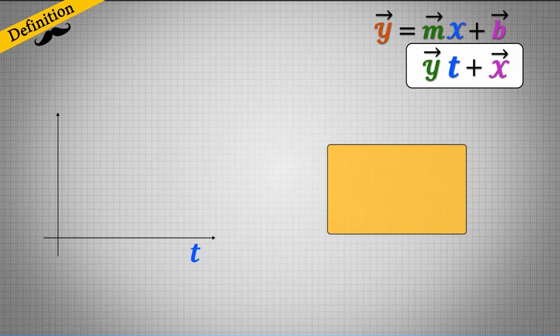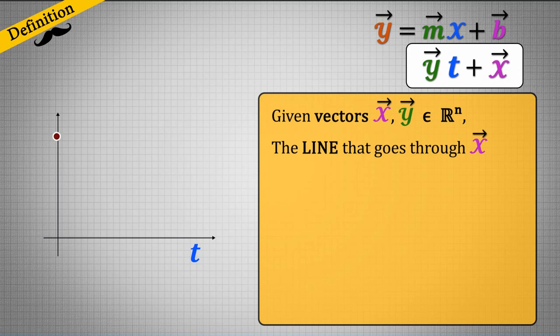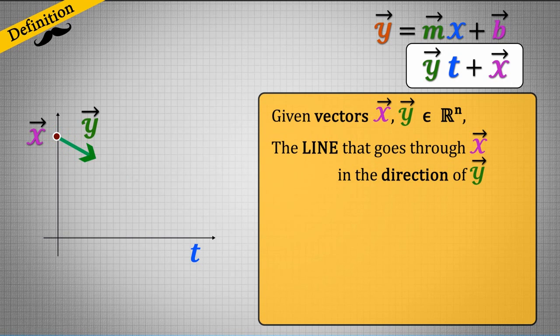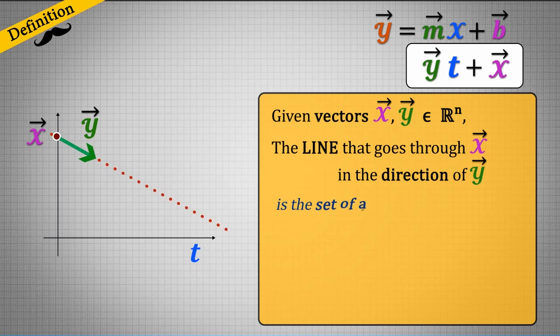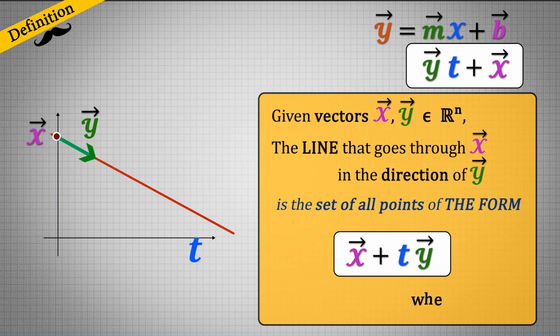Definition: Given vectors x and y in Rn, the line that goes through x in the direction of y is the set of all points of the form x plus t times y where t is a real number.